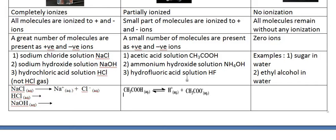Hydrofluoric acid HF solution is also an example of a weak electrolyte, in which HF molecules dissociate partially to produce a small amount of H⁺ and F⁻ ions. Examples of non-electrolytes include sugar in water — sugar does not dissociate into ions, so there are no ions, just dissolution, because sugar is a polar solute and water is a polar solvent. Ethyl alcohol in water is also an example of a non-electrolyte.